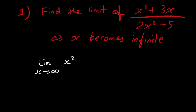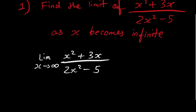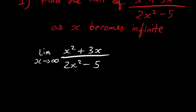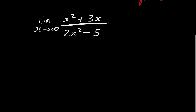We write this as: limit x approaches infinity of x squared plus 3x divided by 2x squared minus 5. To solve this, we don't directly substitute infinity, because that gives infinity divided by infinity, which is undefined. This requires a different approach.